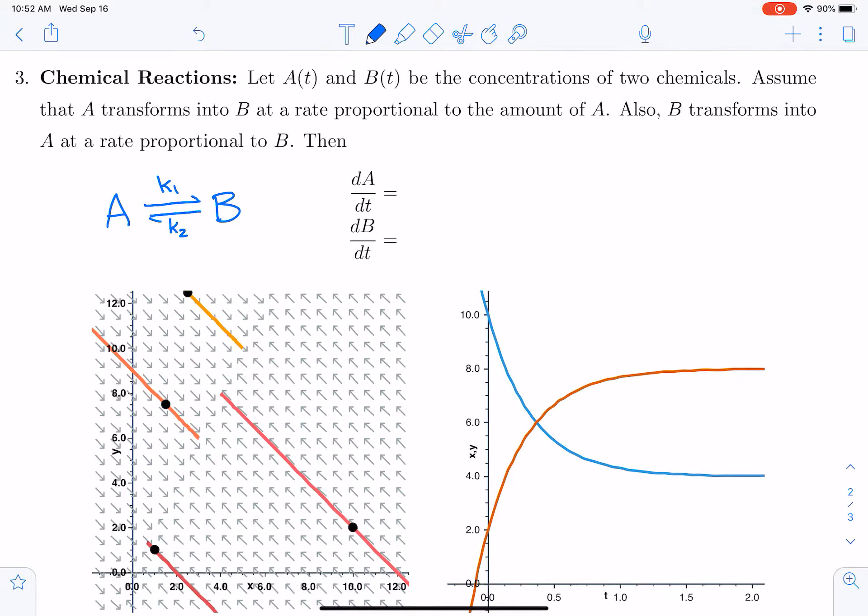So now we want to express that as a system of differential equations. The rate of change of A is proportional to the amount of A. The amount that is lost when transforming into B is proportional to the amount A, so that's minus k1 times A. Of course, that transforms into B, so the rate of change of B is equal to k1 times A as well. So what's lost from A is gained in B.